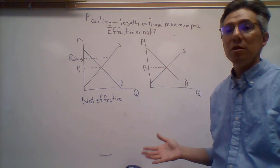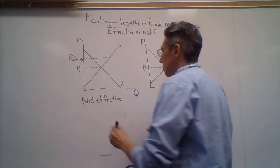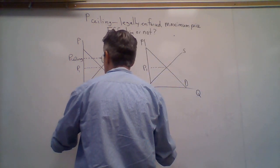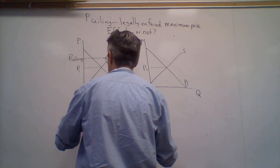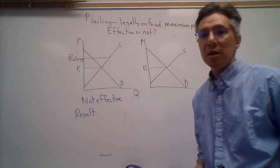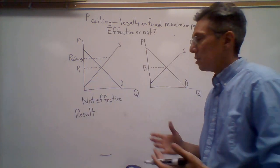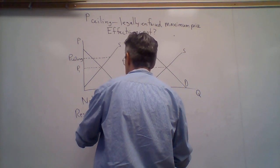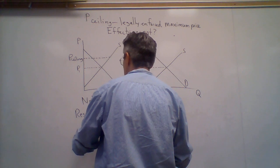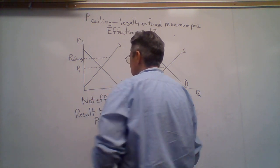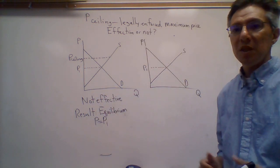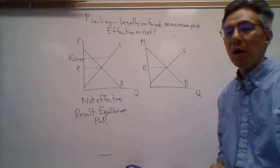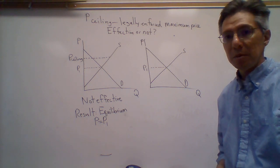So the question is then what is the result? The result, then, if it doesn't work, is basically the equilibrium itself. Price is going to equal the equilibrium price and the quantity is going to equal the equilibrium quantity.